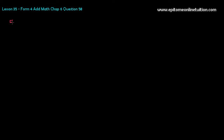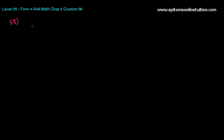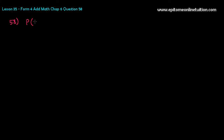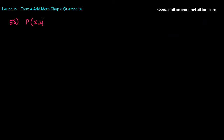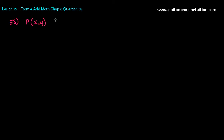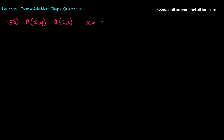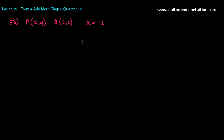Let us continue with question number 58. It says a point P moves — so the coordinates of P are unknown — such that its distance from point Q is equal to its distance from the line x equals negative 2. Find the equation of the locus of P.